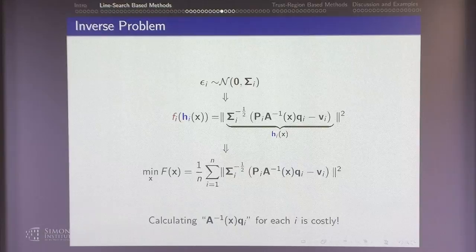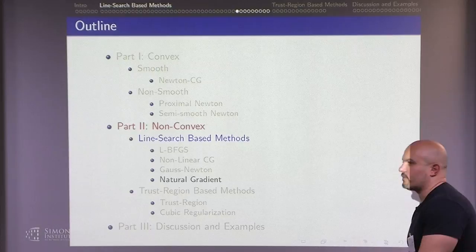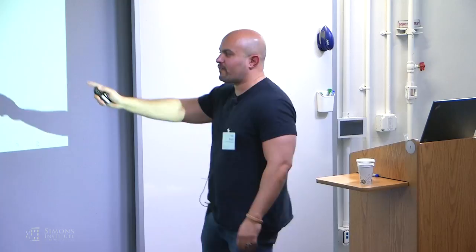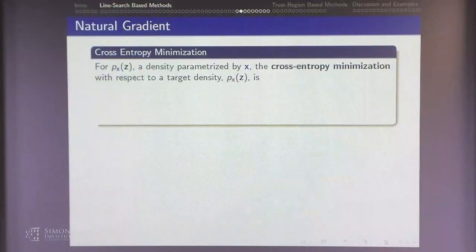Now, natural gradient. I came from scientific computing and had no idea what natural gradient was — I knew Gauss-Newton but not natural gradient. When I came to machine learning, people knew natural gradient but not Gauss-Newton. It turns out there's a beautiful connection. Natural gradient is best described in the context of cross-entropy minimization: I have a density parameterized by x — e.g., a Gaussian — and I minimize the cross-entropy of this density with respect to a target density. If the target is the empirical measure, I recover maximum likelihood estimation.